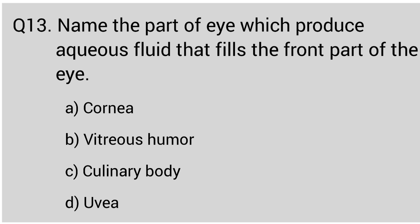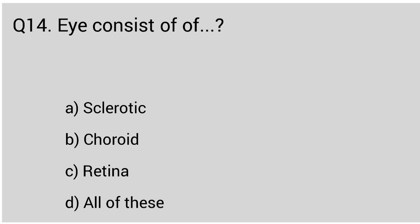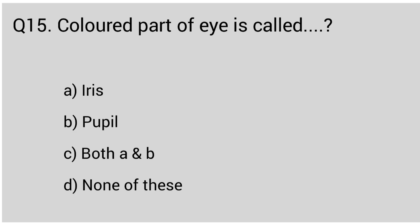Question number thirteen: name the part of the eye which produces aqueous fluid that fills the front part of the eye. The correct answer is option B, vascular humor. Question number fourteen: the eye consists of the correct answer option D, all of these — that means sclerotic, choroid, and retina. Question number fifteen: color photo of the eye is called. The correct answer is option A, iris.